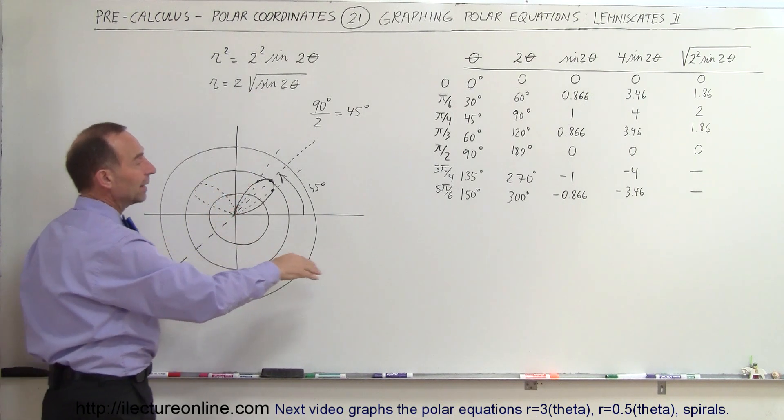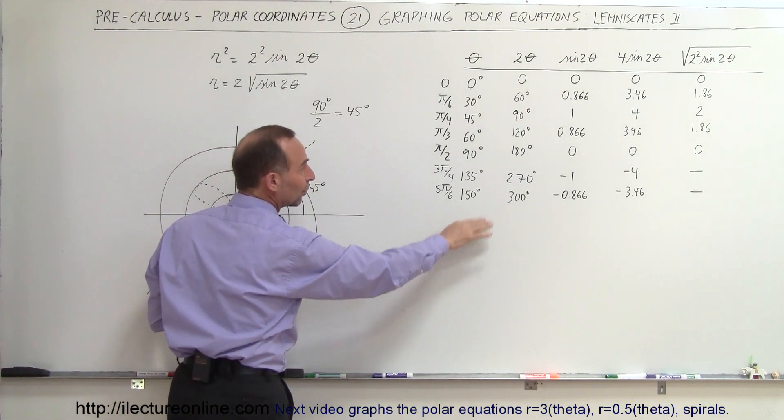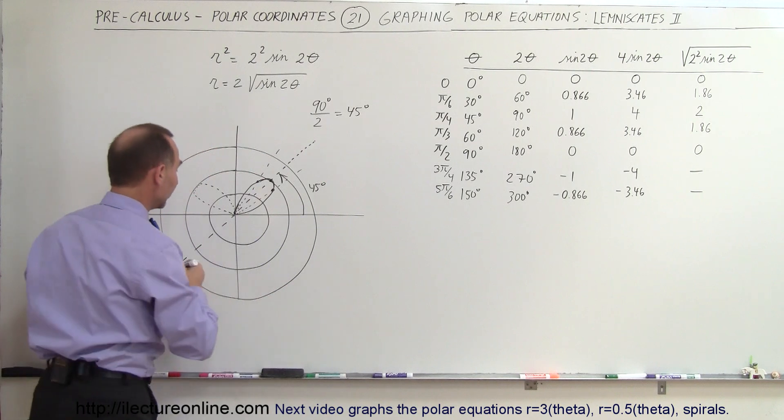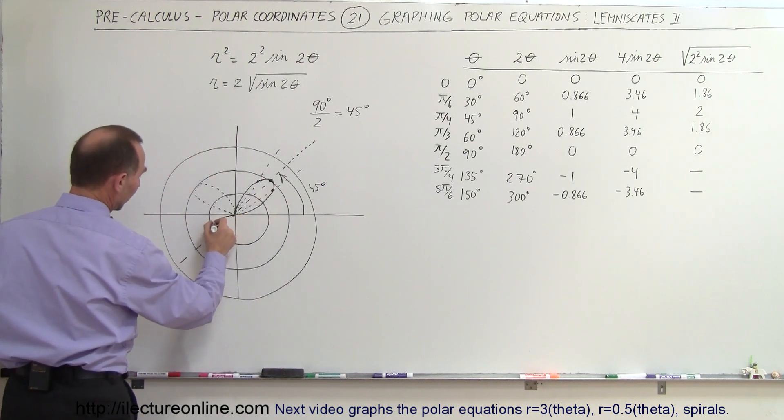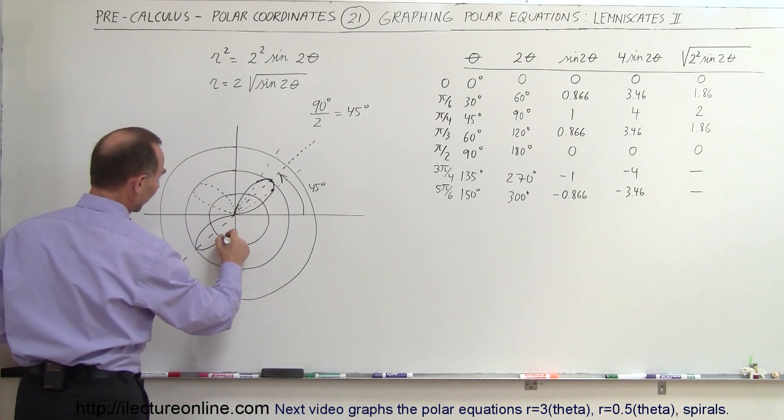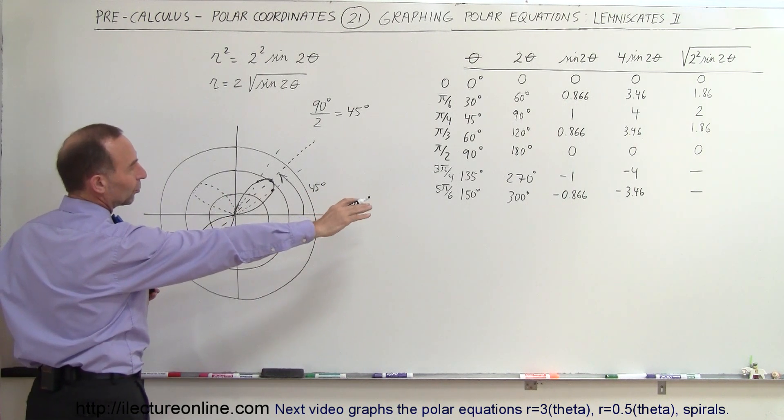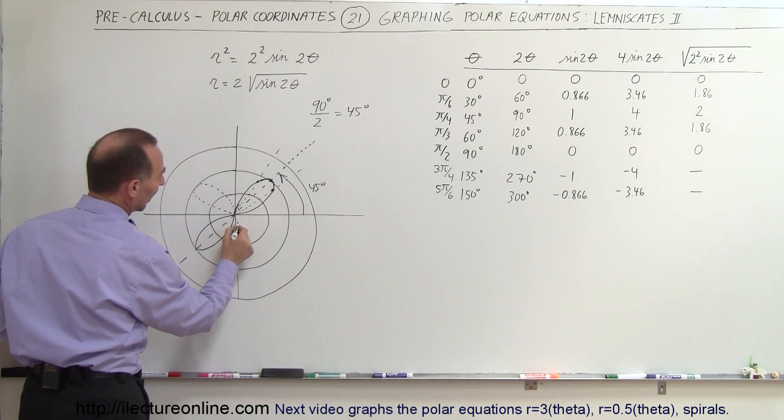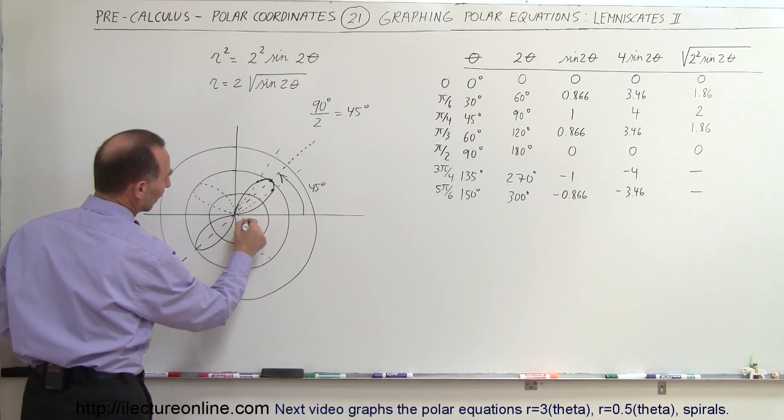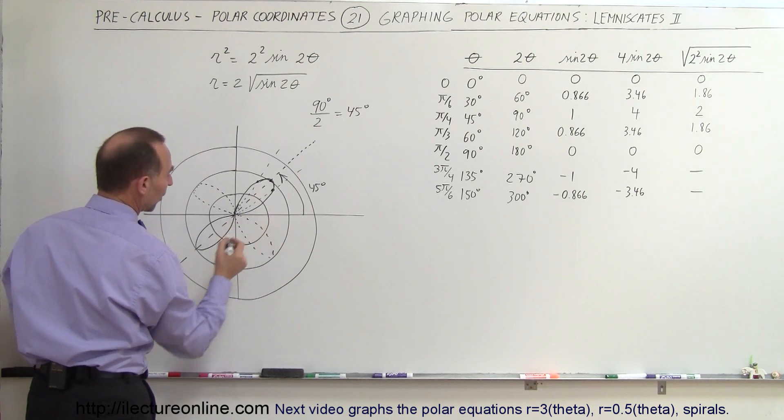Then if we continue on to the next set of values beyond 180 degrees, the numbers turn positive again. So in this direction we will also get a positive leaf, or a positive value that we take the square root of. And then again when we get past 270 degrees, we'll have something that looks like this where we will have negative values so we can't draw that.